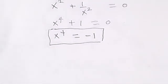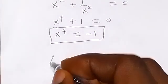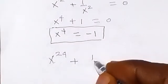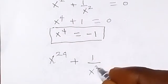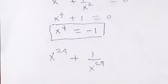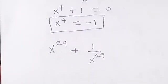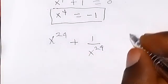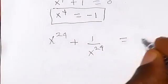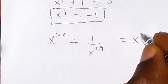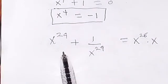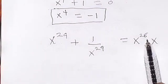So we have x to the power 29 plus 1 over x to the power 29, and we can write this as x to the power 28 times x. We can further write x to the power 28 as x to the power 4 raised to the power 7, because 4 times 7 is 28, then times x.